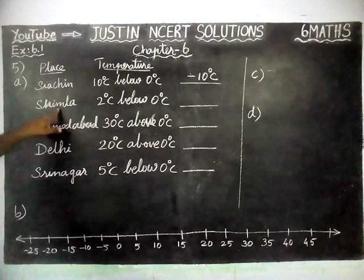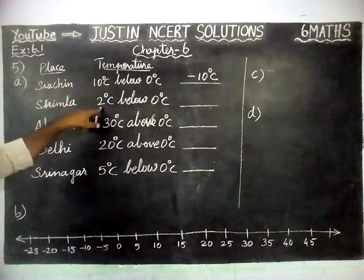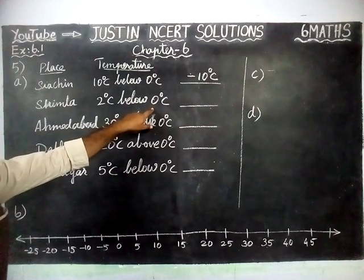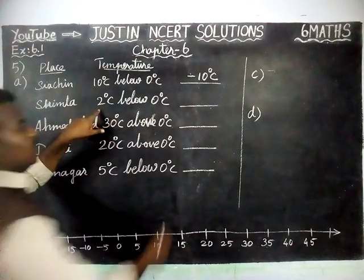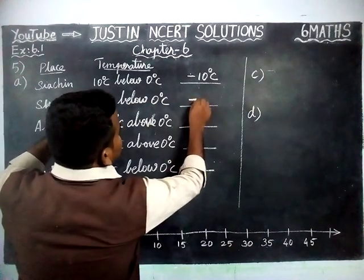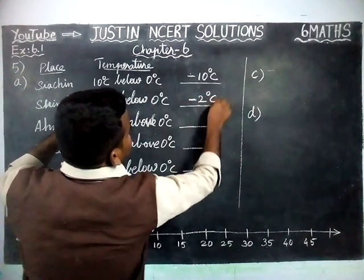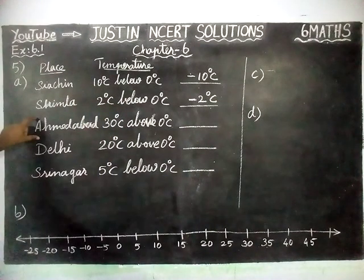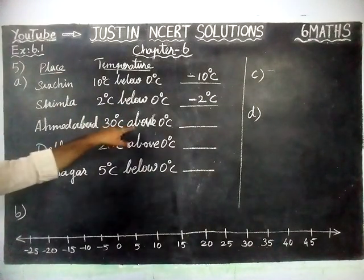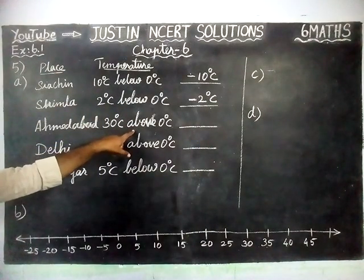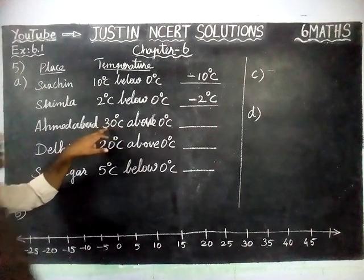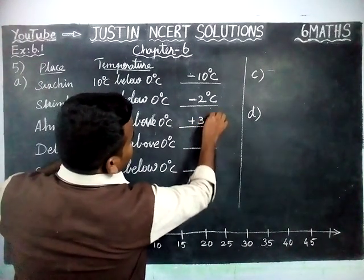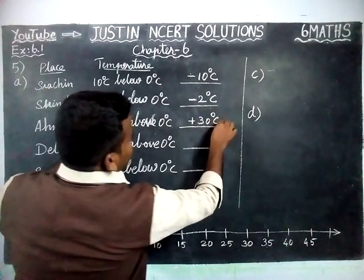Then, Simla is 2 degree Celsius below 0. Below means we have to write it as a negative integer — minus 2 degree Celsius. And then, Ahmedabad is 30 degree Celsius above 0. Above means that is a positive integer, so plus 30 degree Celsius.